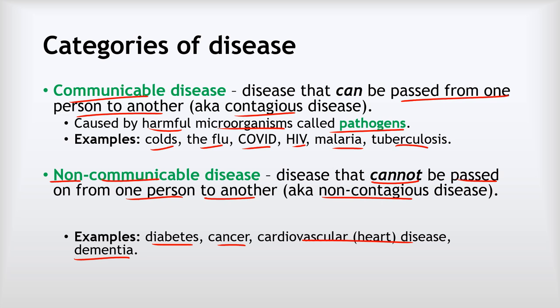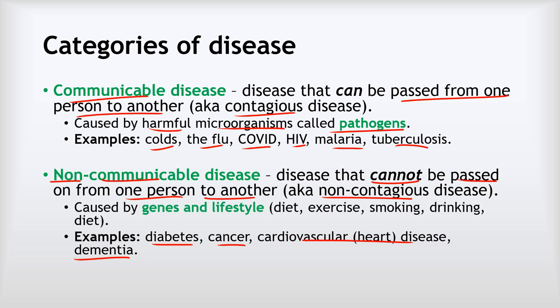The causes of non-communicable diseases fall into two categories. First is genes — some of us inherit genes that end up causing disease. The other causes are down to lifestyle: things like your diet, how much you exercise, whether you smoke, whether you drink, and so on. All of those can contribute to our chances of developing non-communicable diseases.